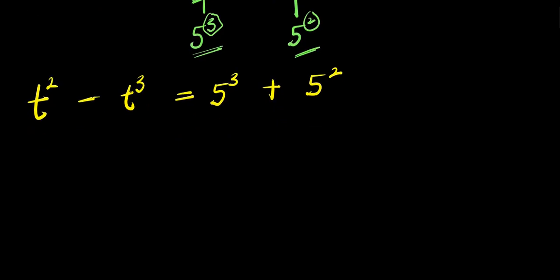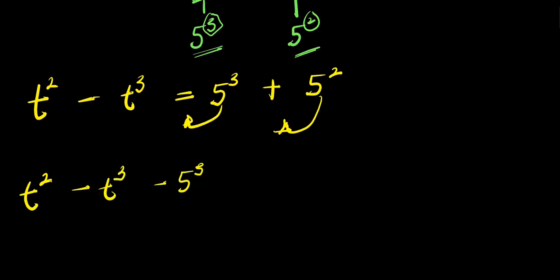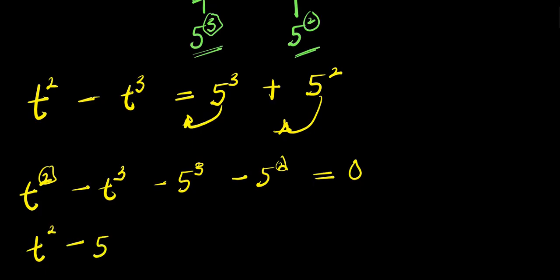The next thing we are going to do is move each of these terms to the other side. So we have t² minus t³ minus 5³, which becomes negative when it crosses the equality side, minus 5², and this equals 0.